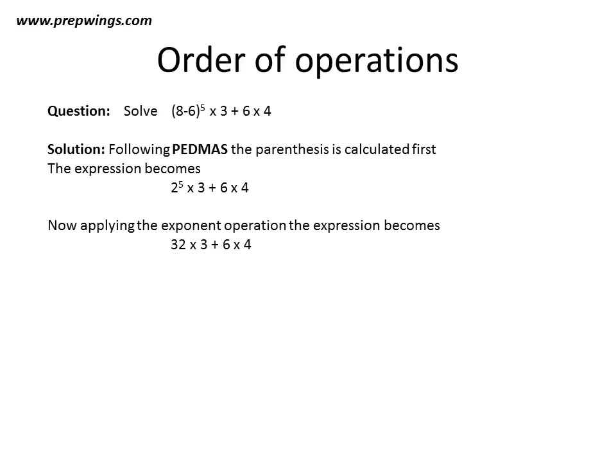Now, applying the exponent operation, because according to PEDMAS, exponent has to be applied before multiplication and addition. 2^5 is 32, so the expression becomes 32 × 3 + 6 × 4.